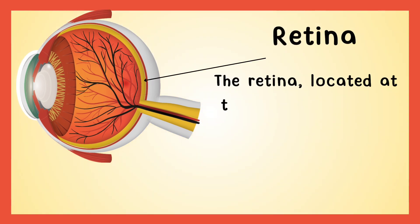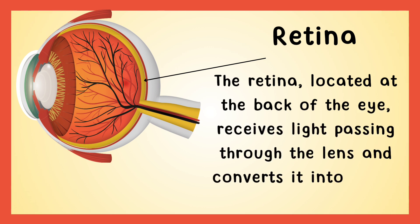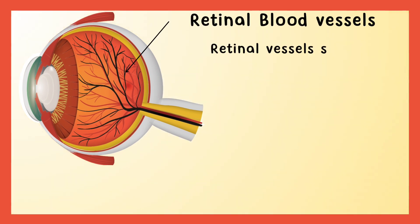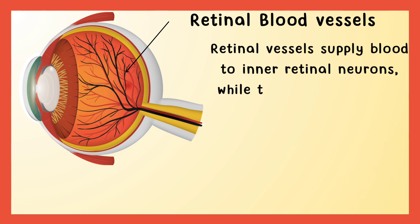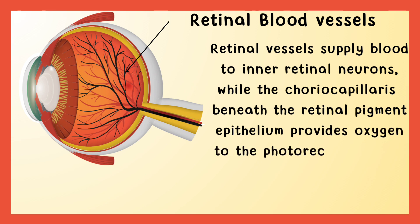Retina. The retina, located at the back of the eye, receives light passing through the lens and converts it into visual images. Retinal blood vessels. Retinal vessels supply blood to inner retinal neurons, while the choriocapillaries beneath the retinal pigment epithelium provides oxygen to the photoreceptor layer through diffusion.